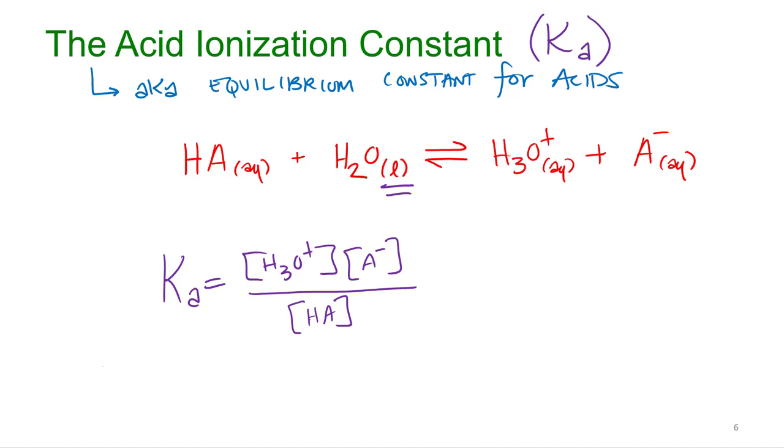We just usually write that as HA or Ha. And that donates the proton to water, making that hydronium and whatever the anion is, A-. So it's hydronium times the concentration of the anion all over the protonated acid, HA.